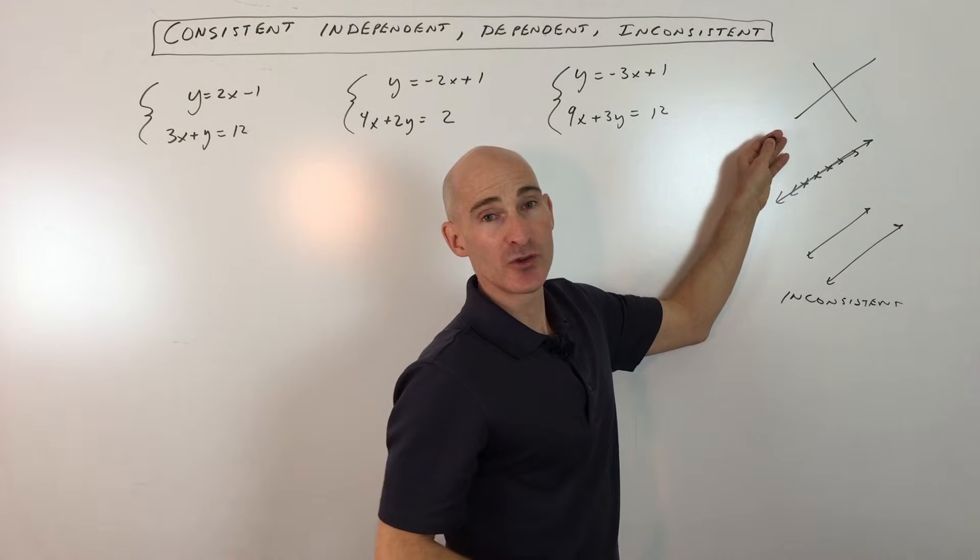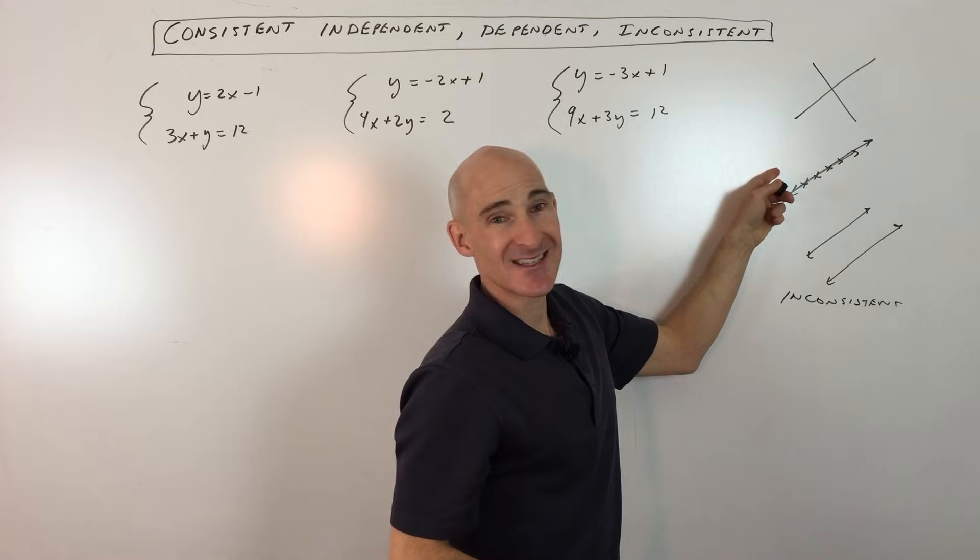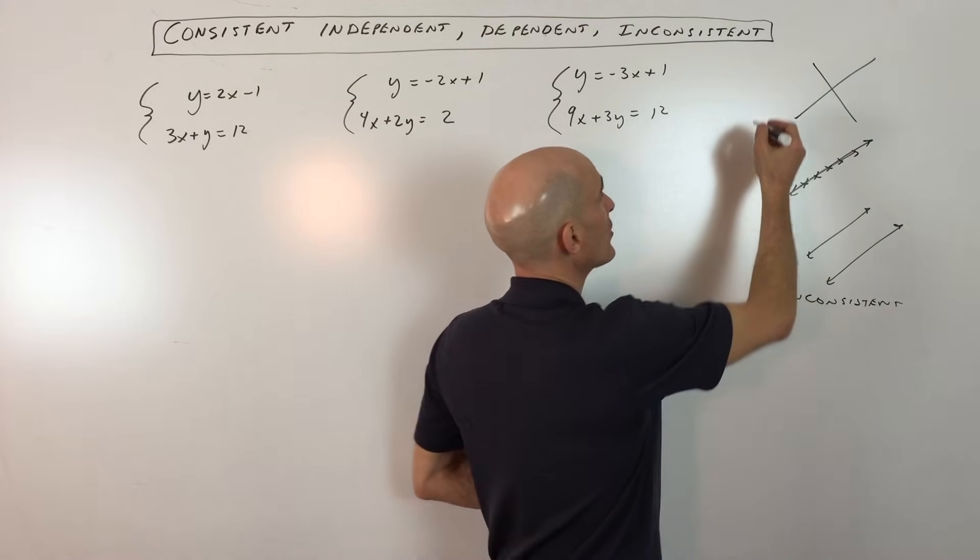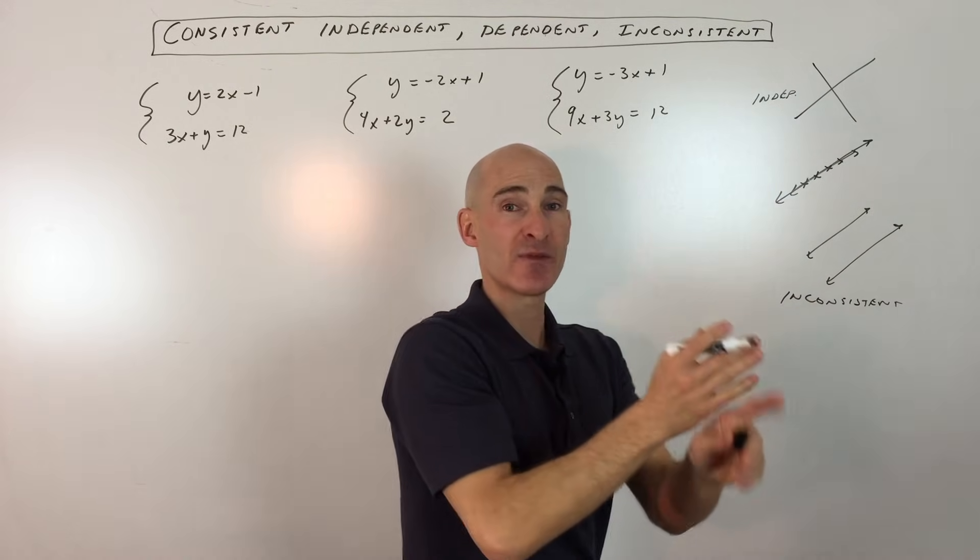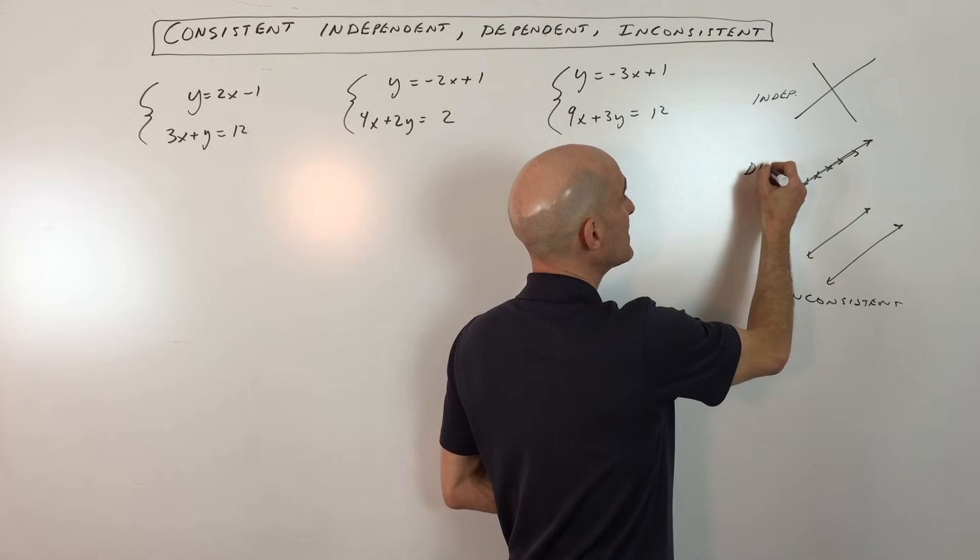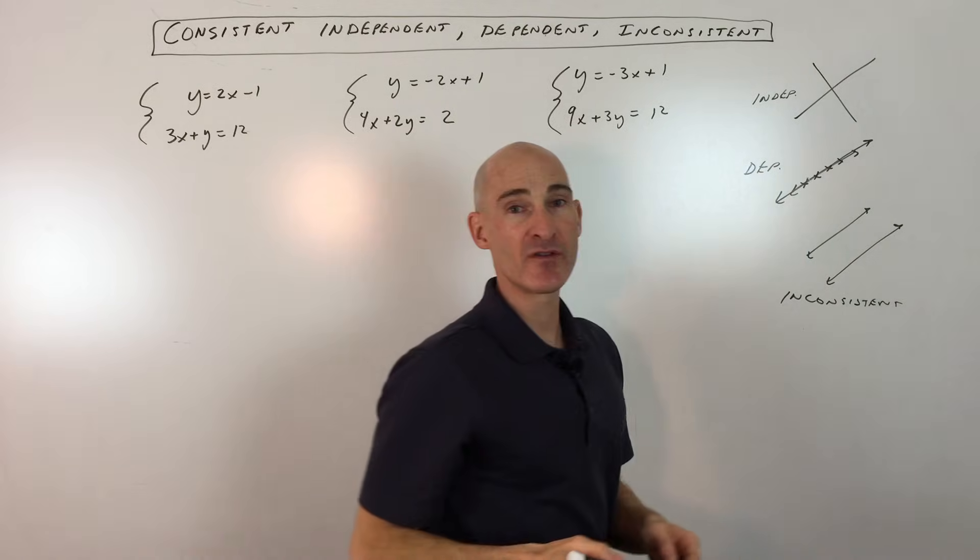Now over here, there is a solution, and these are called consistent, but when there's one solution, this is called consistent independent. And when there's an infinite solution where they're the same line like that, that's called consistent dependent.